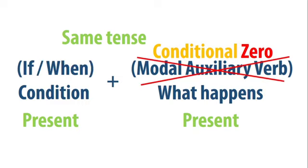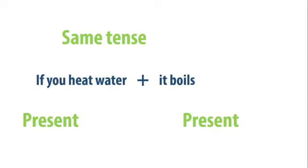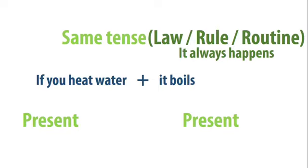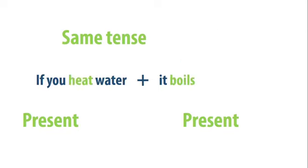So you're going to use present to express the condition—if or when with present—and what happens with a verb in present. No modal auxiliary verbs. Examples: if you heat water, it boils. We're talking about a rule, a routine, or something that is a law, something that always happens. The present verb is heat and the present verb is boils.